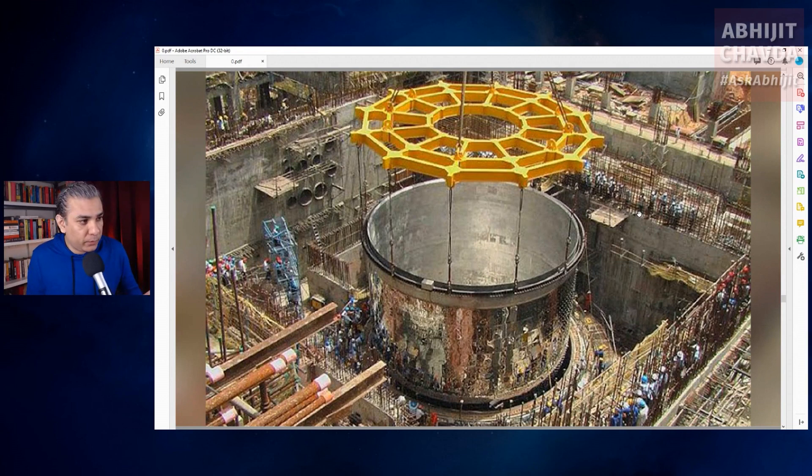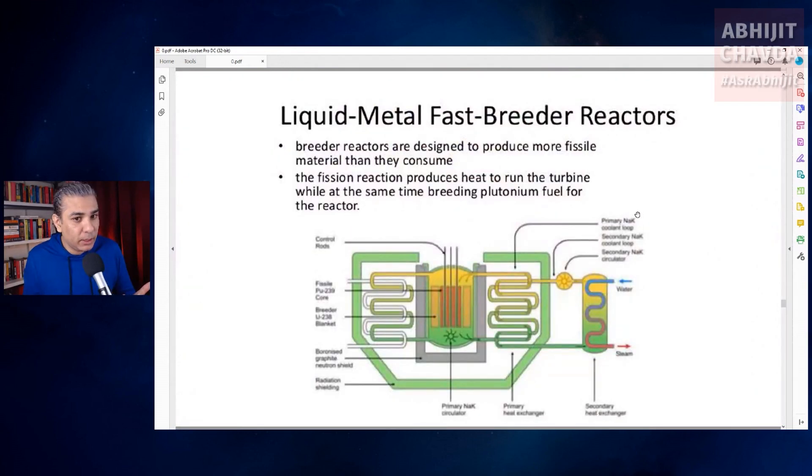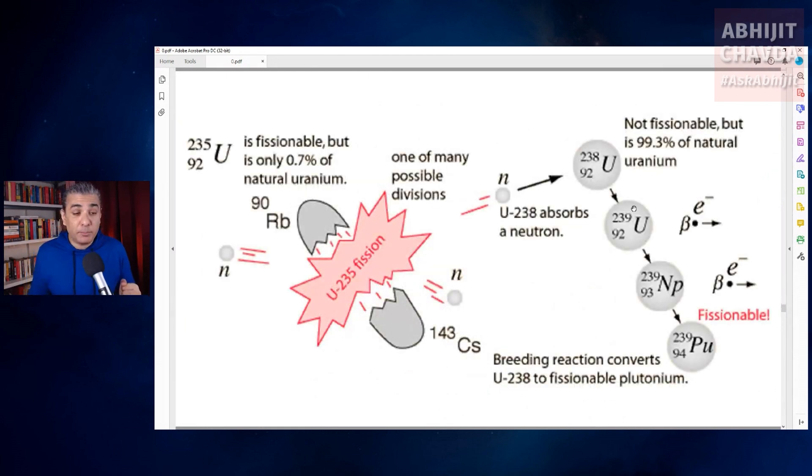There is another kind of reactor called a breeder reactor. It generates more fissile material than it consumes. Breeder reactors can breed plutonium from uranium-238 or they can breed uranium from thorium fuel.